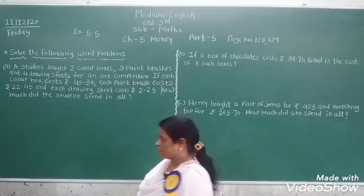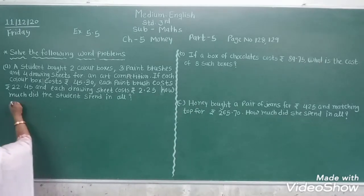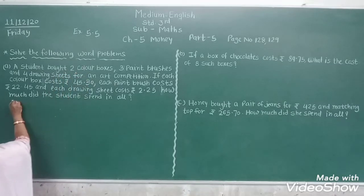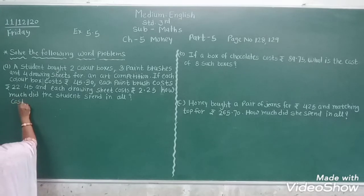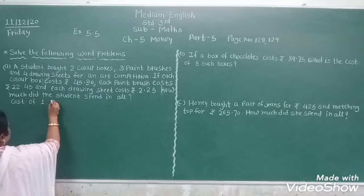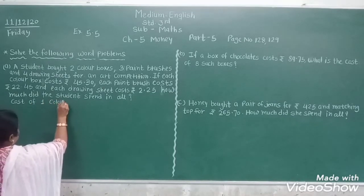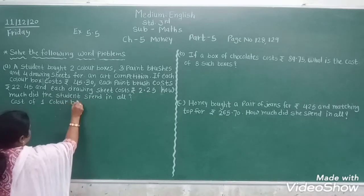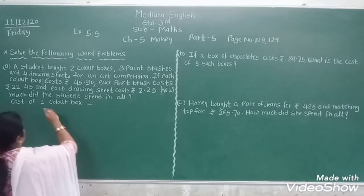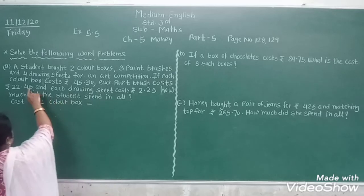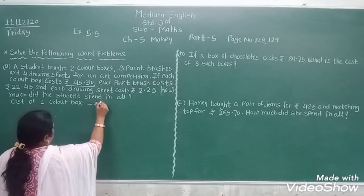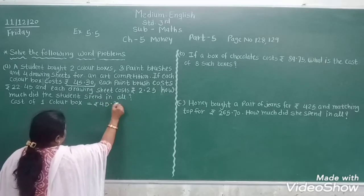So we write the statement. First, we find out the cost of the color box. Cost of one color box: Rs. 45.30 paise.